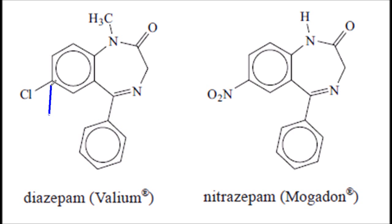They might ask you about that carbon there — there's no hydrogens attached to that, and if you're doing higher level, that's an SP2 carbon. This nitrogen here, depending on which textbook and website you look at, I think that is a tertiary amine, because there's no hydrogens attached to it.